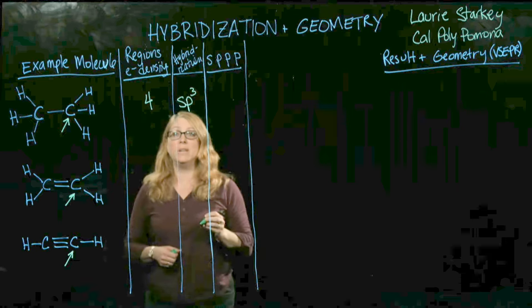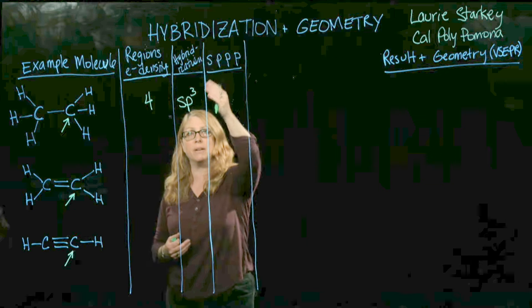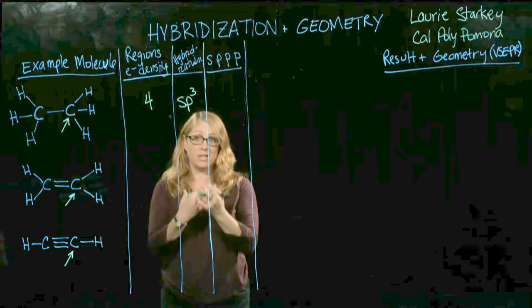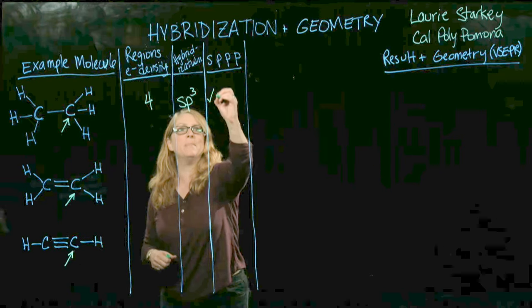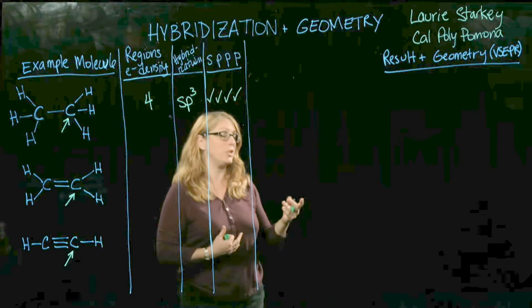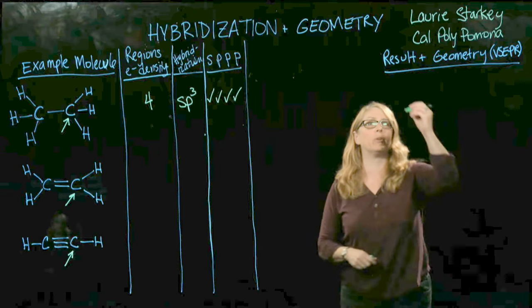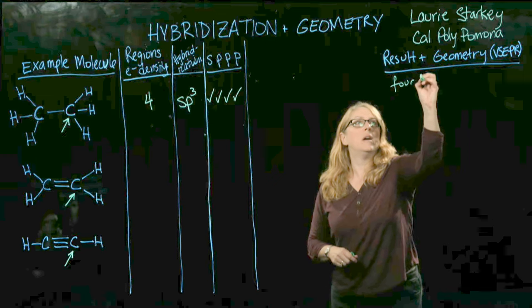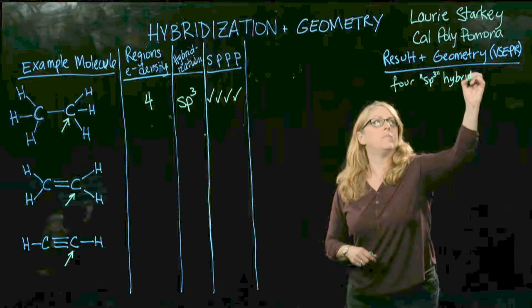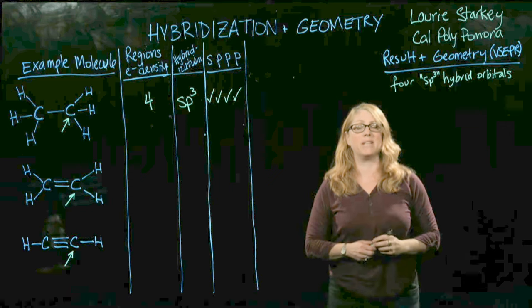That name is derived from the fact that all four hybrid orbitals — recall that carbon has an s orbital and then three p orbitals — this hybridization takes all four of those atomic orbitals and mixes them, the s and all three p's, to give new hybrid orbitals. The result of this mixing is we start with four atomic orbitals and we get four sp3 hybrid orbitals. Each of these hybrid orbitals is described as an sp3 orbital.